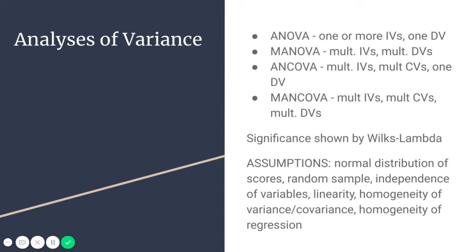Analyses of variance have several forms depending on how many independent variables and dependent variables you have and whether or not you have covariates. An ANOVA is used when you have one dependent variable with one or more independent variables — you look at the variance, which is the distances from the mean, comparing groups such as men versus women or treatment groups versus control. If you have multiple independent variables and multiple dependent variables, that would be the MANOVA, which is better than running multiple ANOVAs because it decreases the chances for error.